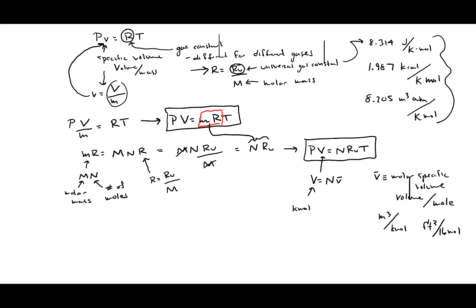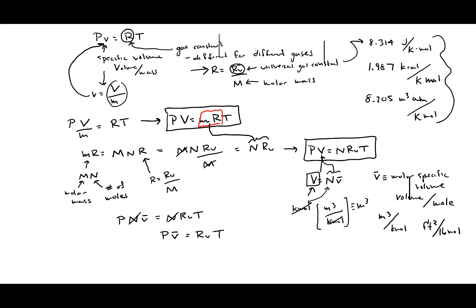The mole number has units like kilomole, and the molar specific volume has units of meters cubed per kilomole, so the kilomoles cancel leaving meters cubed. Substituting into PV = N·Ru·T, the mole numbers cancel, and we get P times the molar specific volume (v̄) equals Ru times T. This is another form of the ideal gas law.